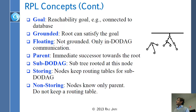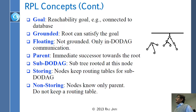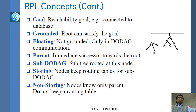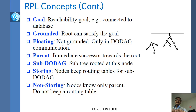A parent is the node your arrow points to, and a child is the node the arrow comes from. Each parent may have multiple children, and you may also have multiple parents. Generally, parents will not be in the same DODAG — you might have one parent in this DODAG and another in a different DODAG, avoiding cycles. Sub-DODAG is the subtree below you — it's technically a misnomer since trees lack direction, but it refers to everything underneath you.